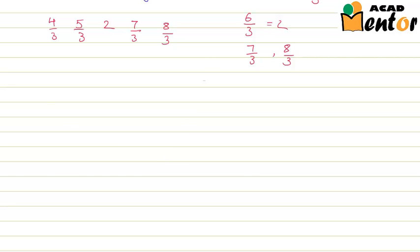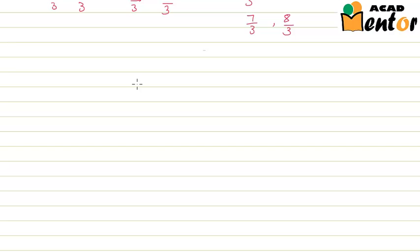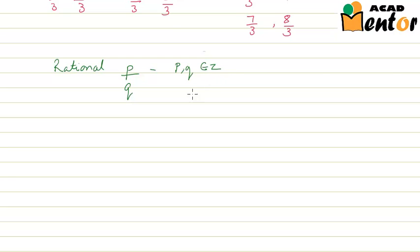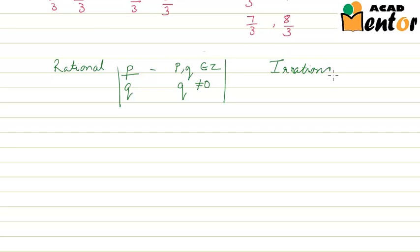Now, in the last video we also talked about irrational numbers. To revise, rational numbers are the numbers which can be represented in the form p by q, where p and q belong to integers and q is not equal to 0. Irrational numbers are the numbers which cannot be represented in the form of p by q.